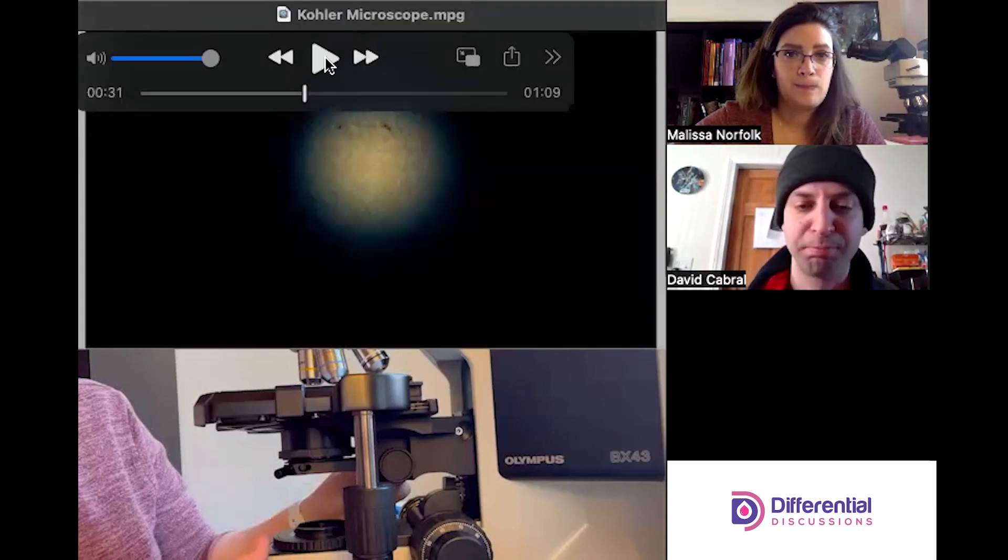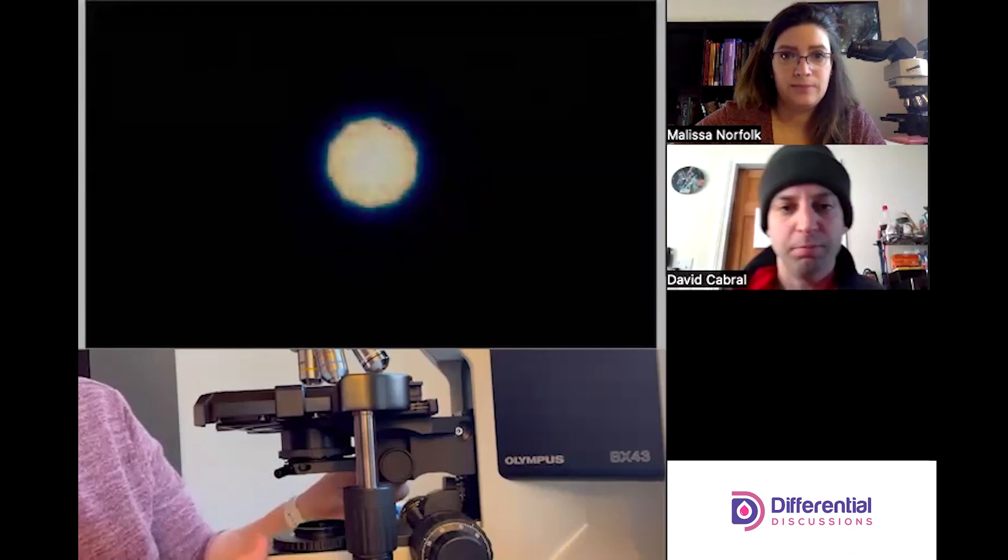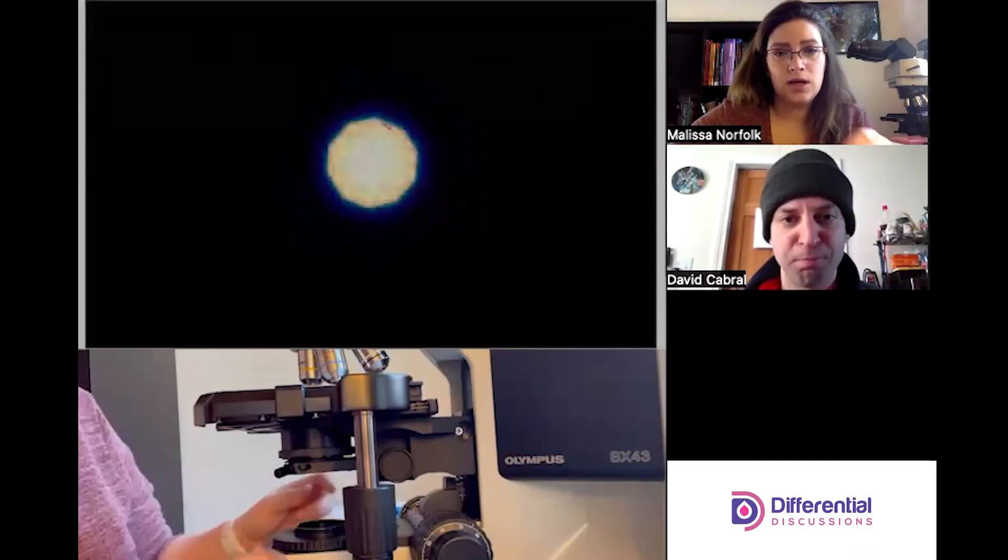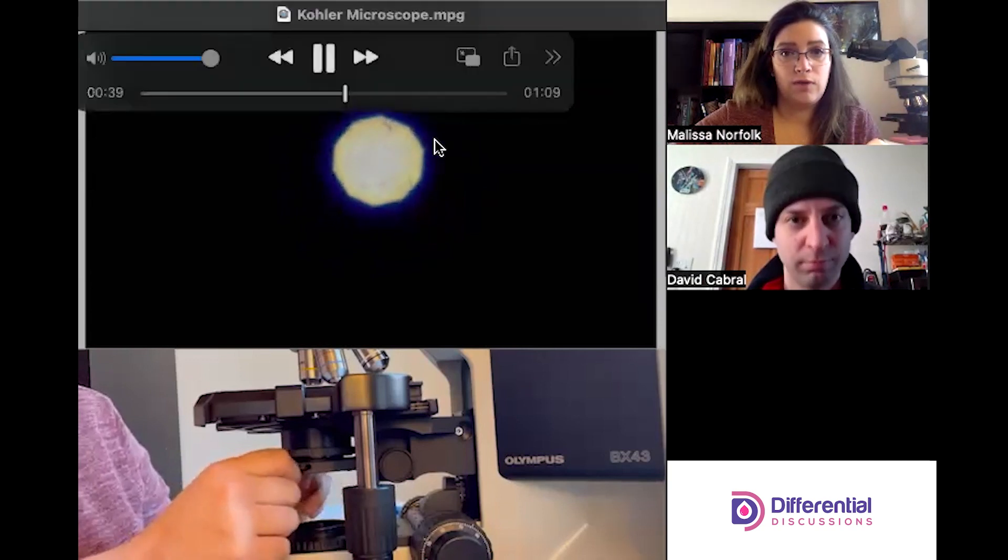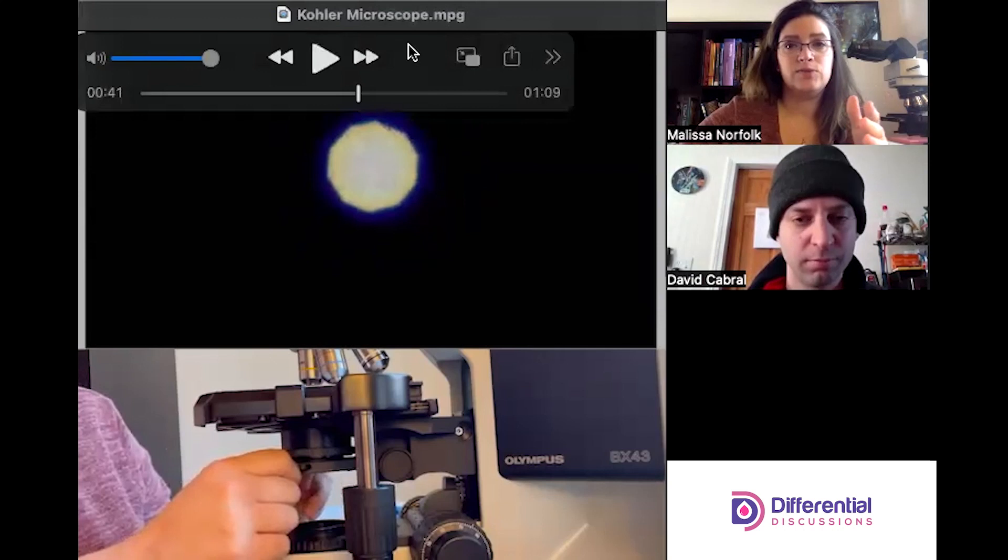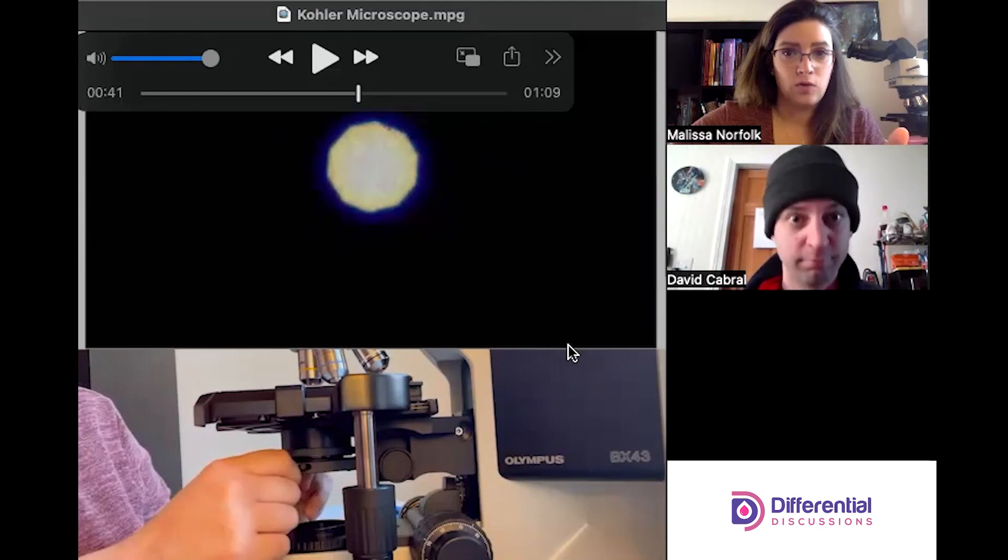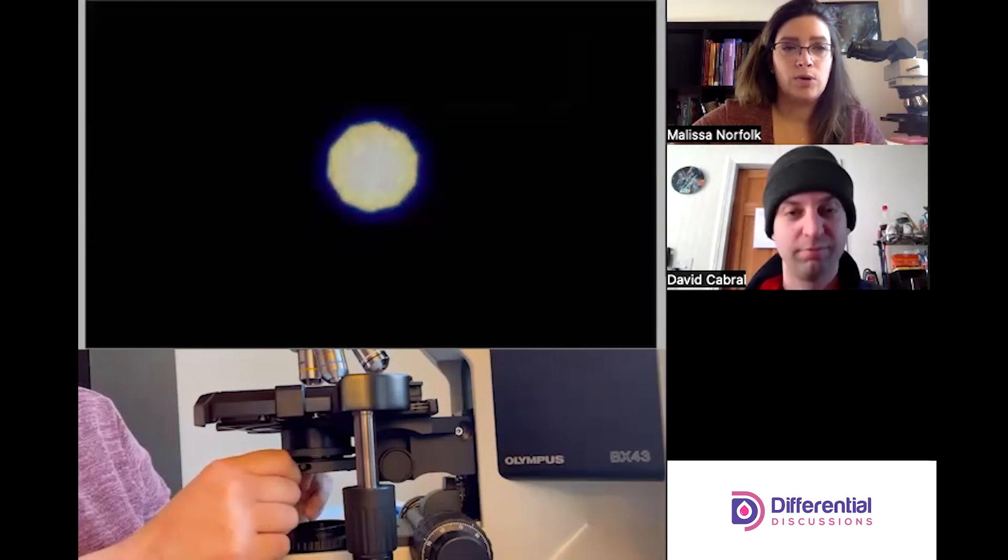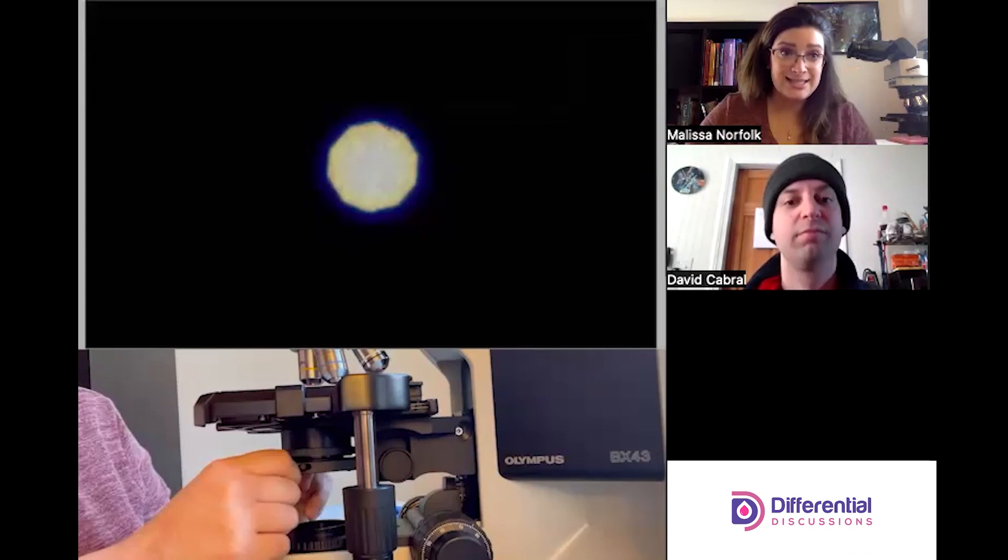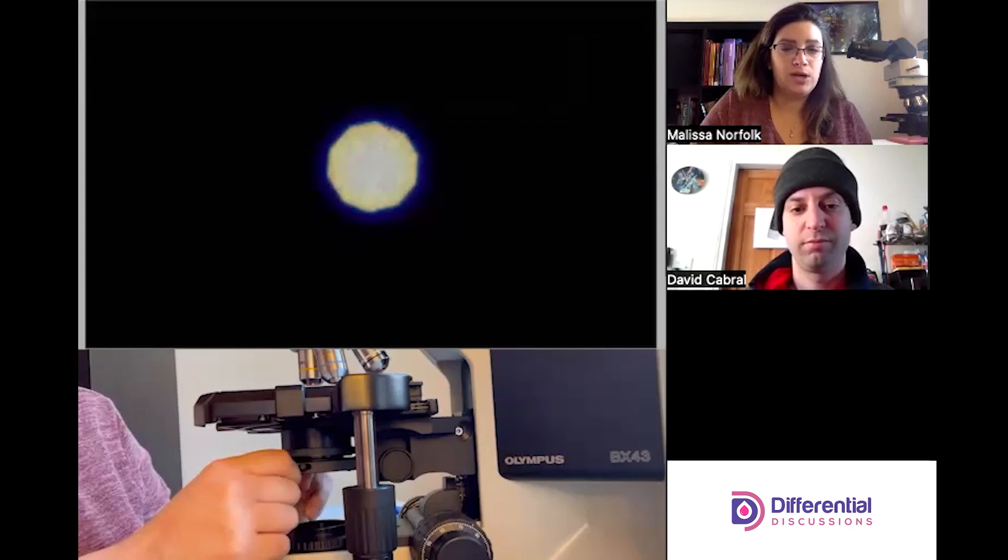I keep playing with it, I bring it back. The other thing that I play with are the condenser knobs to move around that geometric shape. Sometimes you'll come to the microscope and if someone's touched it or moved something, you could find this geometric shape over here or over here or somewhere, but you want it directly in the center of your field of view when you're looking inside of the oculars because you want the light centered.